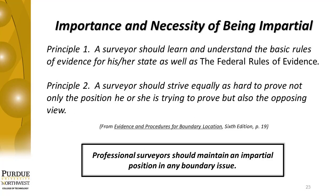Section 2-4 covers the importance and necessity of being impartial. Principle 1 states that a surveyor should learn and understand the basic rules of evidence for his or her state as well as the federal rules of evidence. Whenever one practices a profession, the individual should be knowledgeable about the rules of engagement. Since the surveyor creates the original evidence, then describes it in field notes or descriptions, and many years later expects another surveyor to identify and recover this ancient evidence, both the creating surveyor and the retracing surveyor should understand what is expected of each.